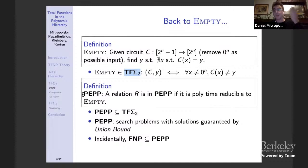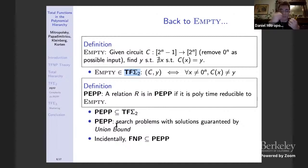PEPP is a subset of TF sigma_2. The union bound says: if the total number of inputs isn't enough to cover some output space, there must exist an element in the output space outside the range of your mapping — it's the same thing. Interestingly, we prove that FNP is a subset of PEPP, which we don't think is the case for TFNP. So this suggests these may be different.